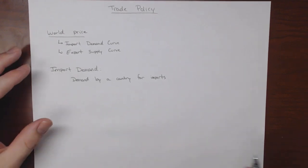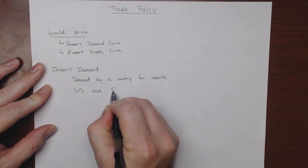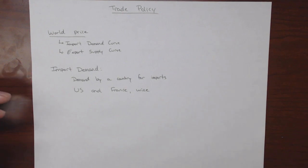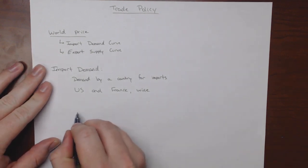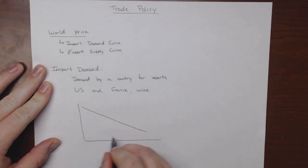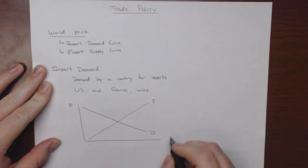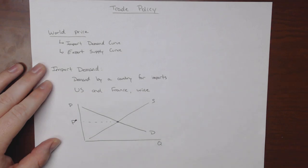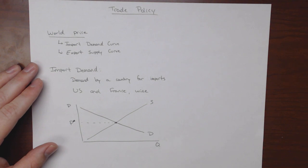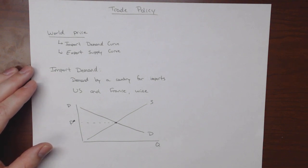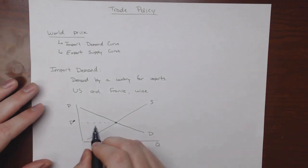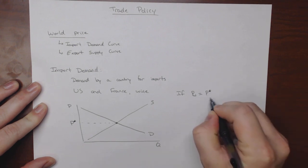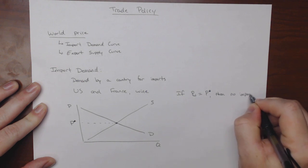We're going to examine two countries hypothetically: the US and France. We're going to talk about the wine market. Let's say we have a US market for wine — it's got a demand curve and a supply curve, and it has some equilibrium price. Now, if the world price P* equals the domestic equilibrium price, then there are no imports.